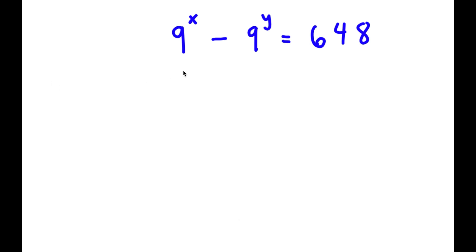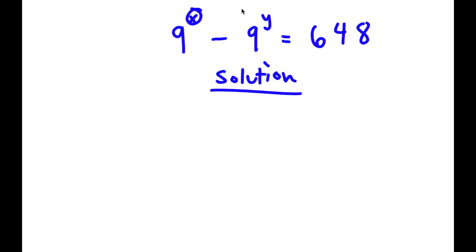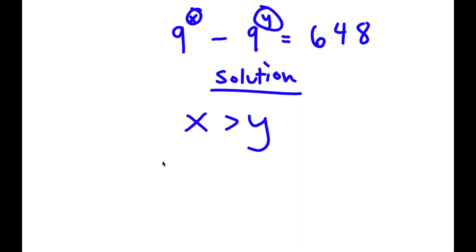In this problem, I have 9 to the power of x minus 9 to the power of y is equal to 648. For my solution, I'm going to first start by looking at x and y. By just looking at it, we can state that x is going to be greater than y, because if x was less than y, our solution to this equation would be negative, and it's positive. So x is greater than y, meaning that we can say that x is equal to y plus some number k.